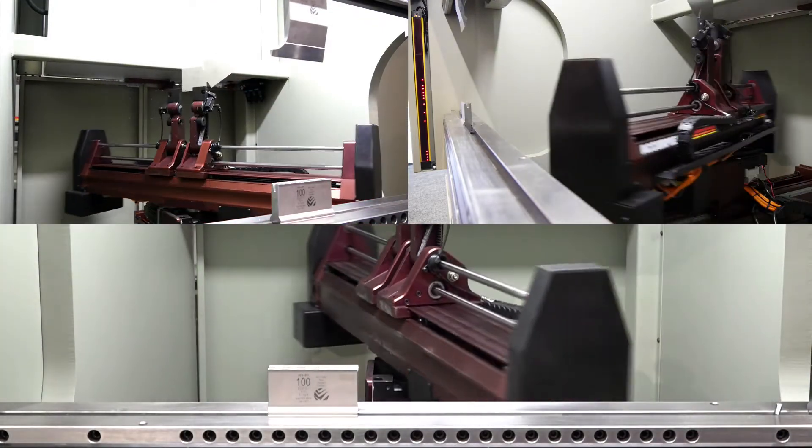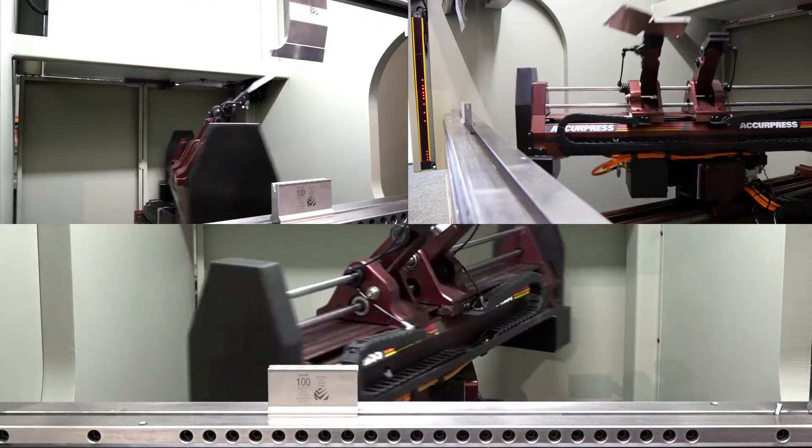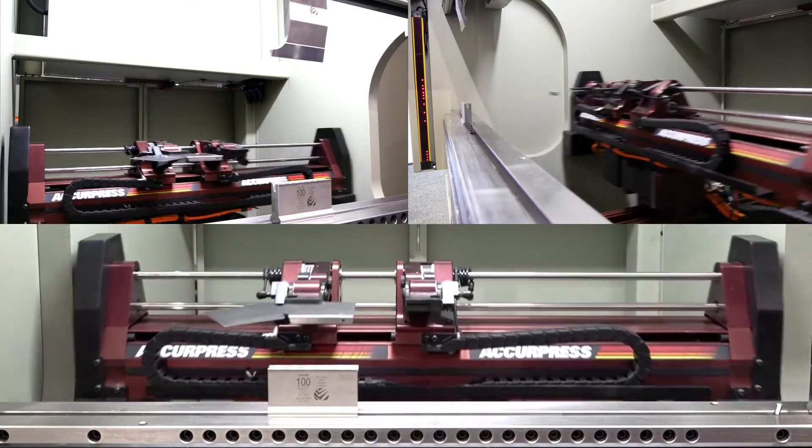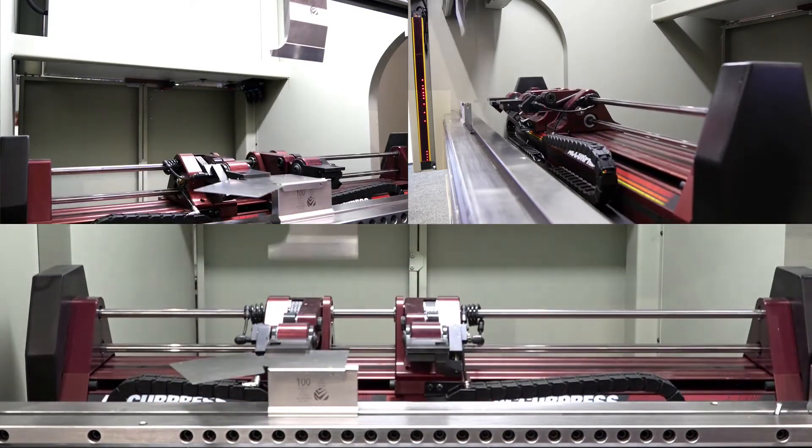Available for the 60-ton hybrid model, the Ally Back Gauge gauges and positions parts independently, adding accessible automation technology to the machine.